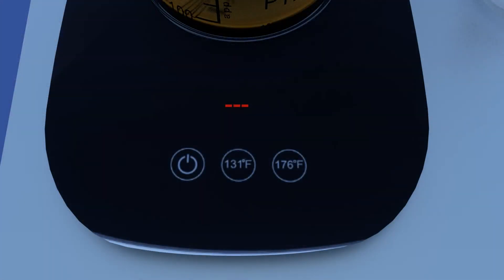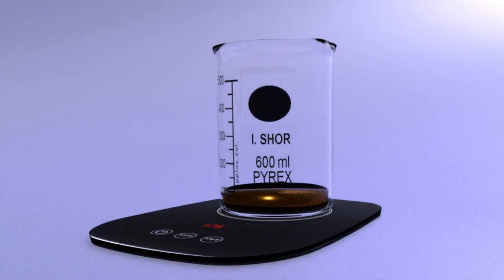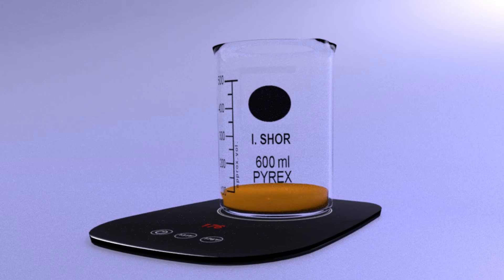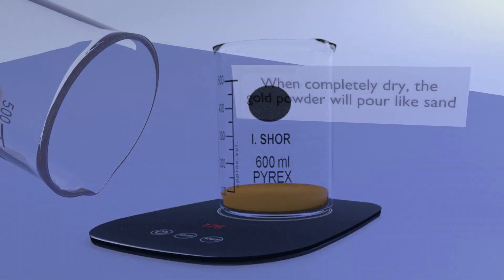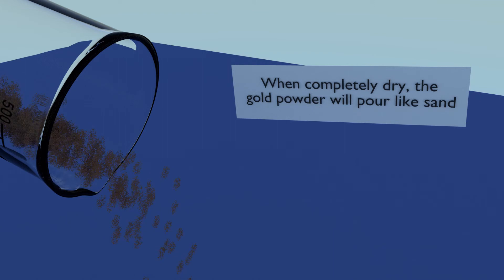To dry the gold mud, place the beaker on the hot plate and turn it on. Any distilled water overlaying and clinging to the gold mud will evaporate, leaving a dry brown gold powder that will pour out like sand.